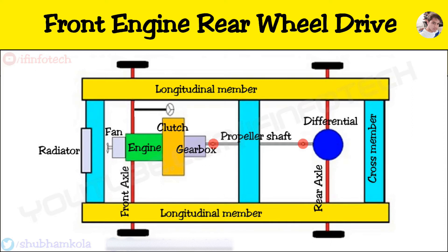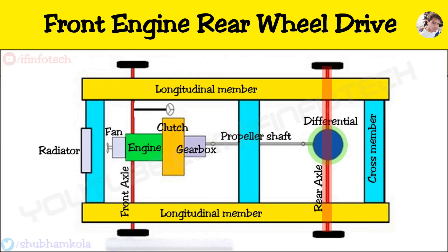With the help of the universal joint, the drive adjusts to different inclinations when the vehicle comes across shocks. The differential is used to split the torque in equal proportion to the rear axle. The rear axle is supported on leaf springs and it also helps to turn the vehicle.